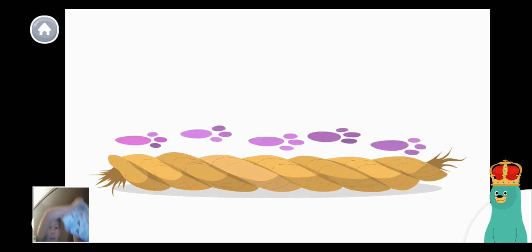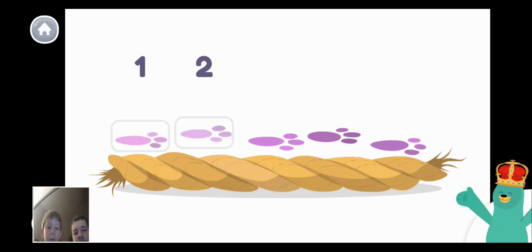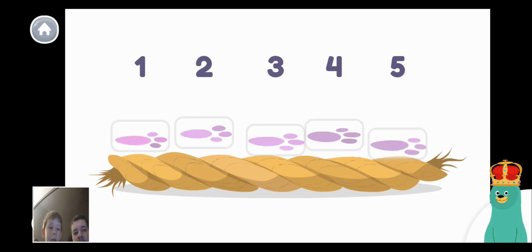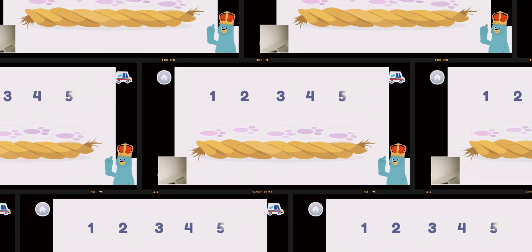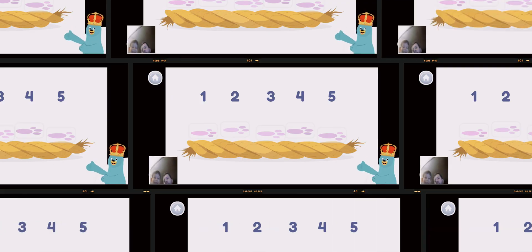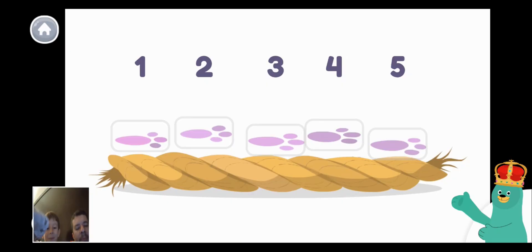Let's count the paw prints. How many? One, two, three, four, five. The rope is as long as five paw prints.